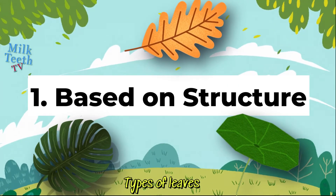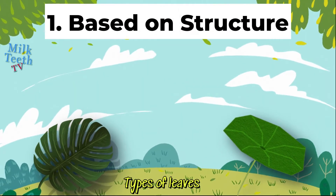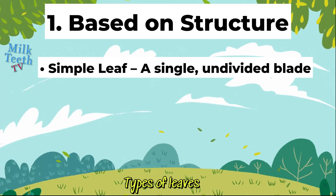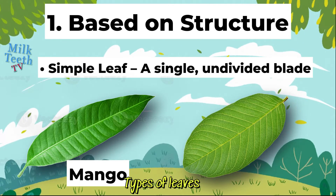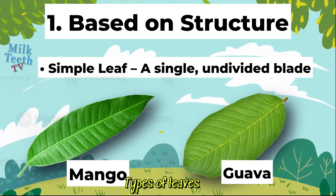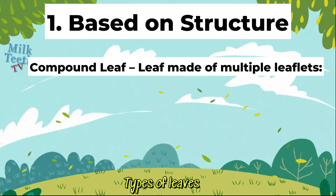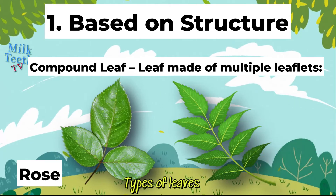Number 1: Based on structure of the leaves. Looking at the structure of the leaves, we can classify leaves as simple leaf — it has a single undivided blade. For example, mango and guava. Compound leaf — a leaf made up of multiple leaflets. For example, rose and neem.